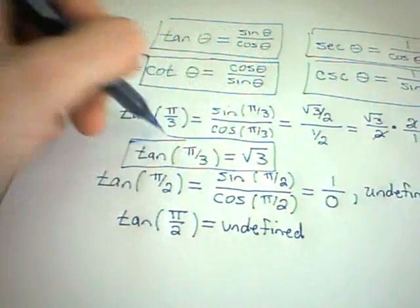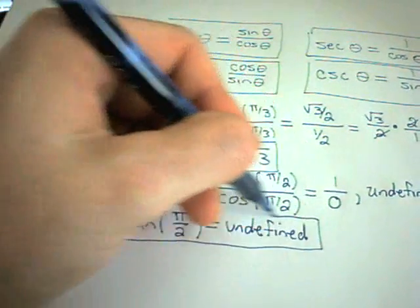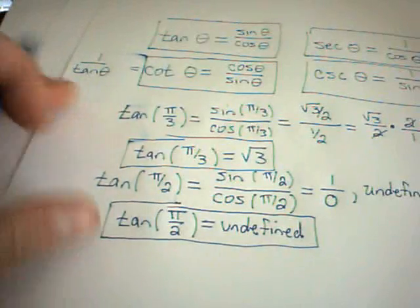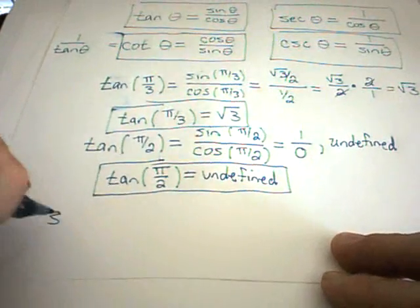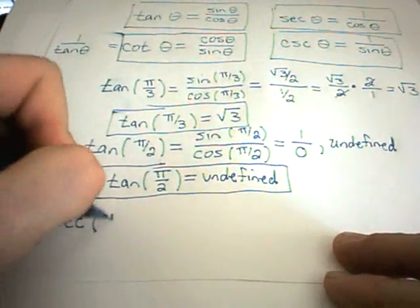Okay, so there's a couple of them real easily. Let's do a couple others here. Let's evaluate, let's say, secant of pi over 6.